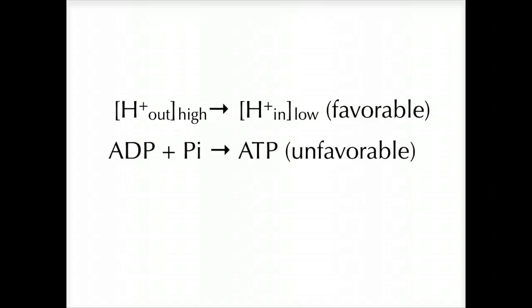Now we're going to take this hydrogen ion gradient — this electrochemical gradient — and we're going to couple it to the formation of ATP from ADP and phosphate, which is itself an unfavorable reaction.